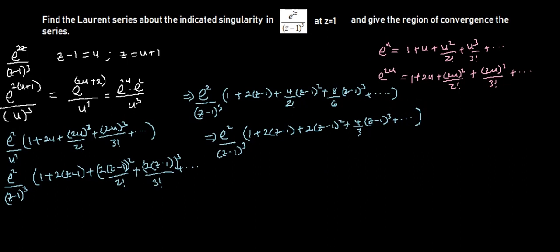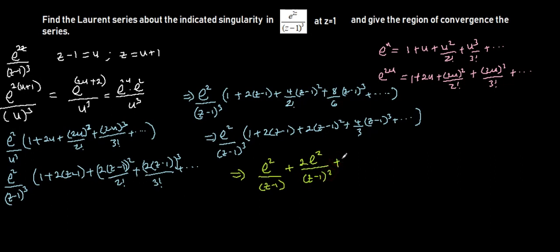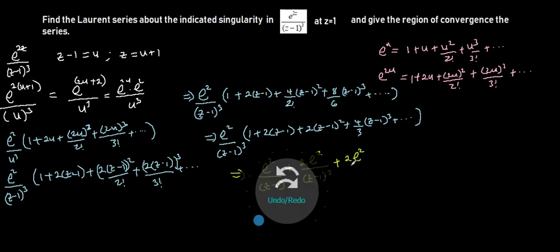So we have exponential 2 over (z minus 1) cubed into 1 plus 2(z minus 1) plus 2(z minus 1) squared plus 4 over 3 times (z minus 1) cubed, continuing to infinity. Now let's expand this to get our final answer. This gives us exponential 2 divided by (z minus 1) cubed, plus 2 exponential 2 divided by (z minus 1) squared.